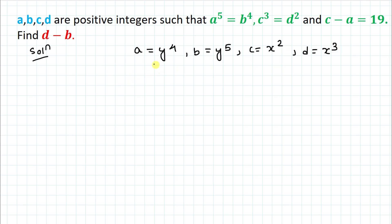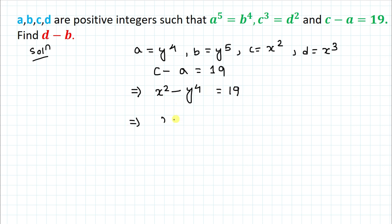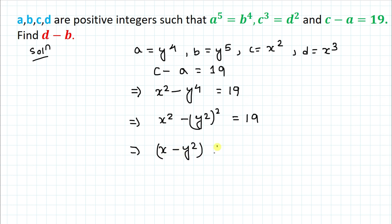We have the given equation c minus a equals 19. Substituting the values, x squared minus y to the power 4 equals 19. We can rewrite y to the power 4 as (y²)², so we have x² minus (y²)² equals 19. Applying the algebraic identity a² minus b², we get (x minus y²)(x plus y²) equals 19.